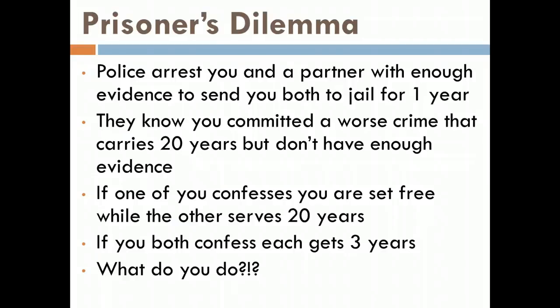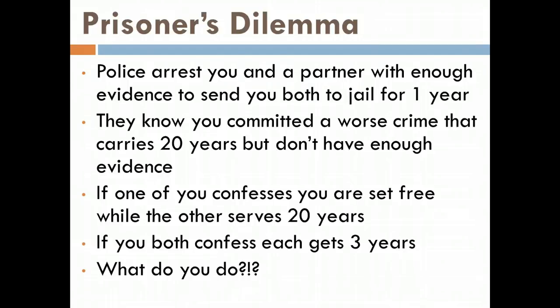In the prisoner's dilemma, the setup is that you're arrested with a partner and there's enough evidence to throw you in jail for one year. They know you've committed worse crimes that would lead to 20 years in prison, but they don't have enough information to convict you. They separate you and your partner and tell you both that if you confess, they'll set you free and your partner will serve 20 years. But if you both confess, you'll each get three years in jail.